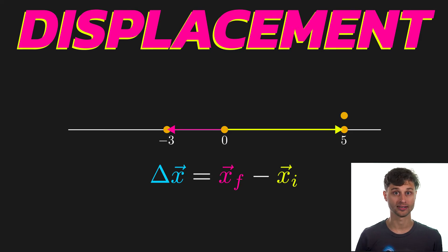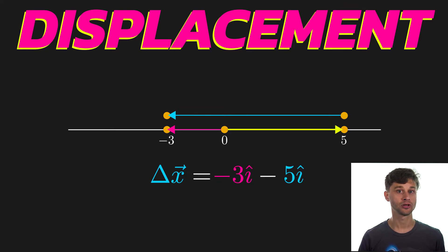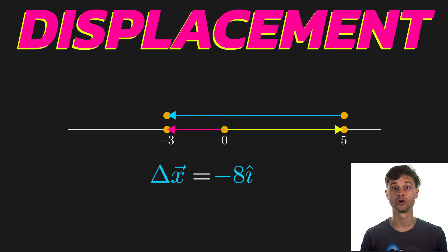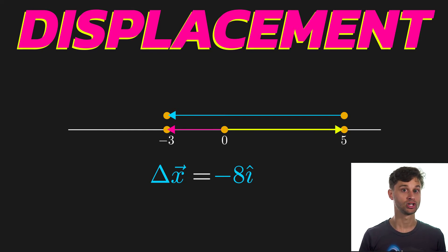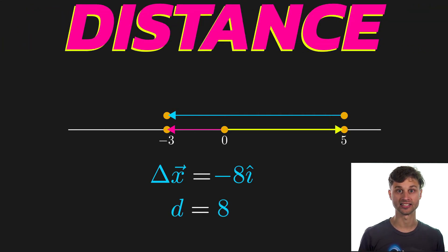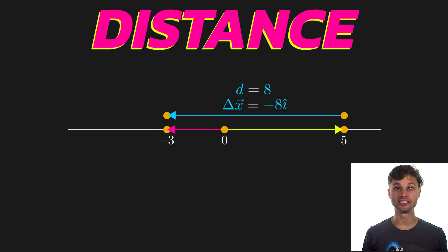The delta is very important — it indicates that this is a change in position. Displacement measures the difference between the final position and the initial position. Since position is a vector, so must be displacement. In one dimension, if I have an initial position of 5 î and a final position of -3 î, then my displacement between these two points would be -3 î minus 5 î, or -8 î — in other words, moving eight units to the left.